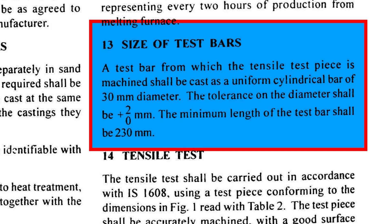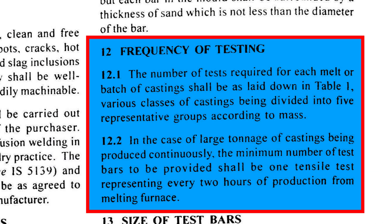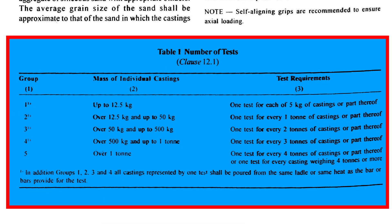These test bars are cast at the same time and from the same melt as the castings they represent. Grey cast iron casting is a continuous process, making it impractical to conduct tests on every production run. Therefore, the testing frequency is defined as per Table 1 of IS-210, which specifies the number of tests required for each melt or batch of castings.